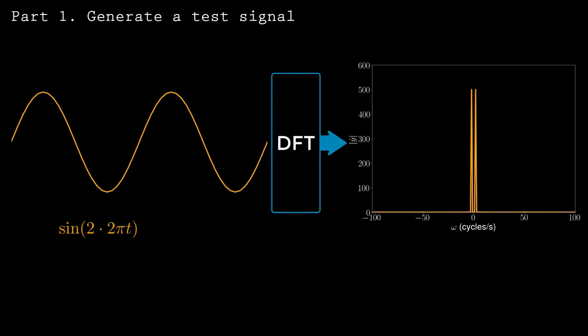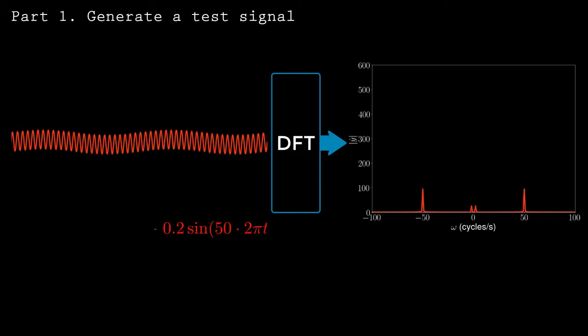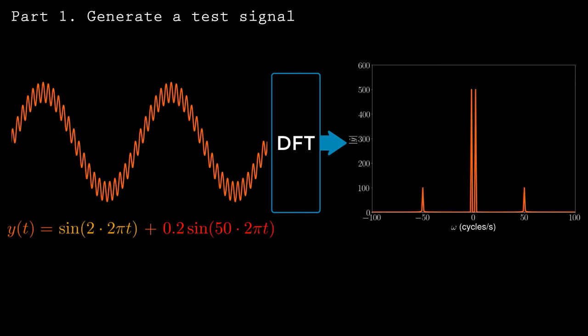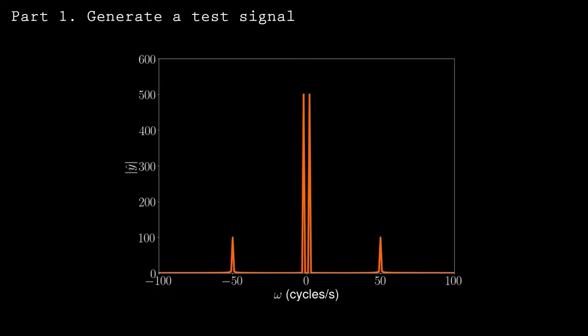Here I've isolated the 2 Hz signal, and here's the 50 Hz signal. The peaks are mirrored at negative frequencies because I'm using the two-sided discrete Fourier transform. Now we'll create a low-pass filter that preserves the 2 Hz component and eliminates the 50 Hz noise.